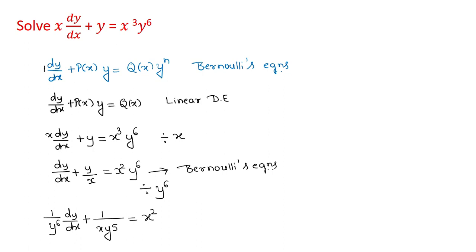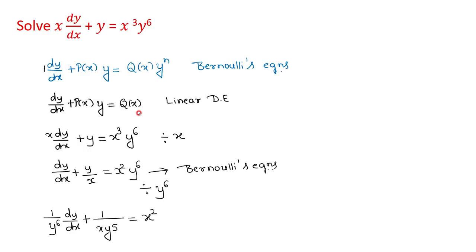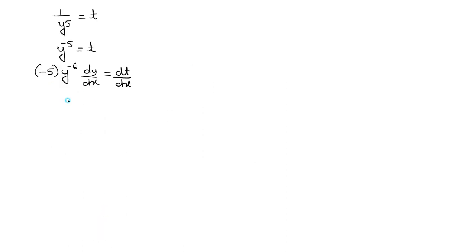To reduce this equation to a linear equation, we use the substitution 1/y^5 equal to t. Write this as y raised to minus 5 equal to t. On differentiation with respect to x, it is minus y raised to minus 6 times dy/dx equal to dt/dx. So the value of (1/y^6) dy/dx is equal to minus (1/5) dt/dx.